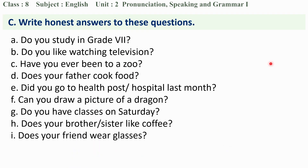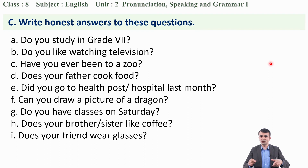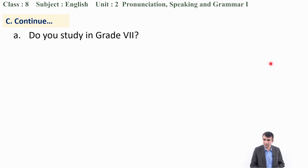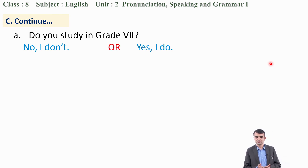Finally, we will practice responding to yes/no questions. Write honest answers to these questions. First: 'Do you study in Grade 7?' If you are a Grade 8 student, you say 'No, I don't.' If you are a Grade 7 student, you say 'Yes, I do.' Second: 'Do you like watching television?' Answer: 'Yes, I do' or 'No, I don't.'